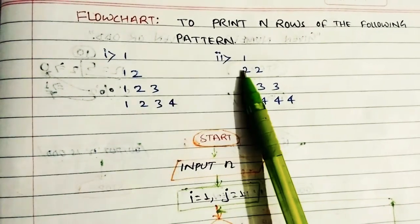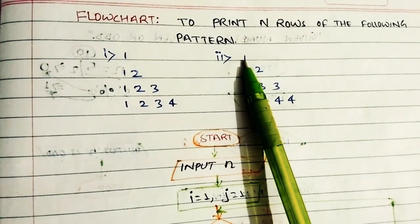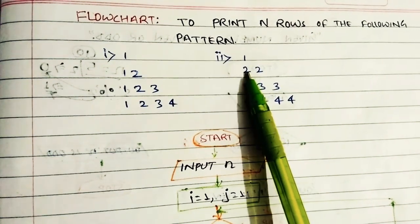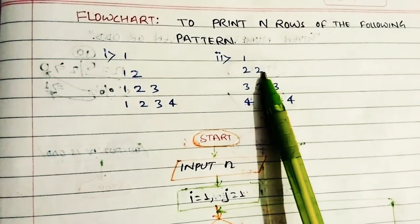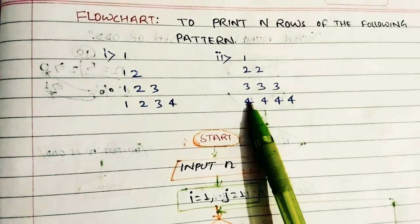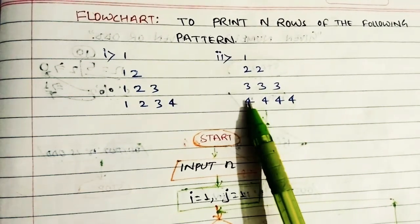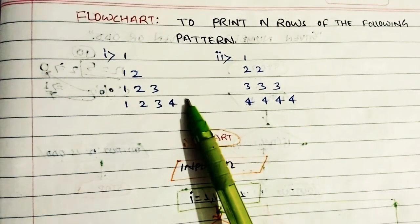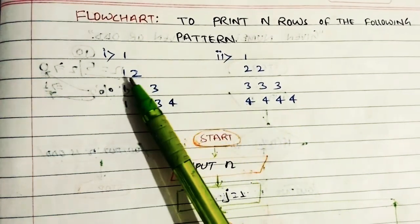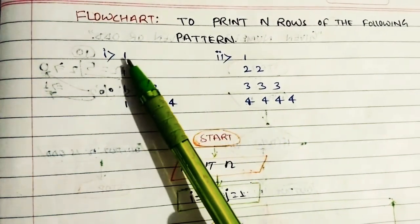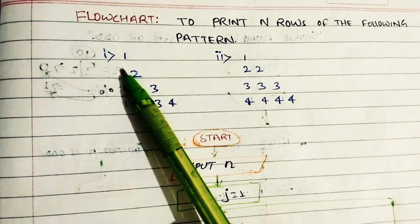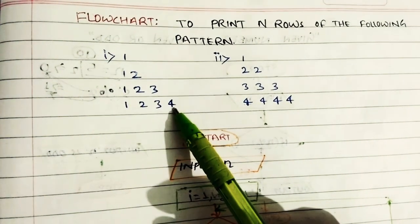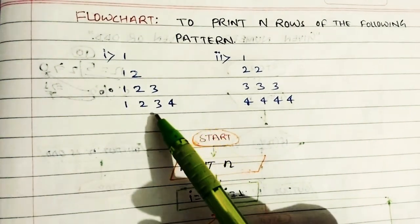Now we have to talk about the second pattern. We are seeing that in the first row, second row, third row, and fourth row, there are similarities with pattern one. In the fourth row, the value appears four times. There is a lot of similarities between the two patterns. We will always go to 1, passing up to 4.